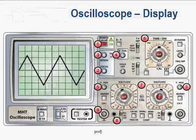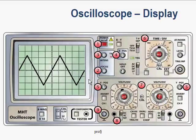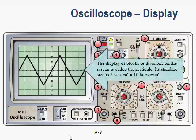The display of an oscilloscope is very important to understand. It is made up of a number of vertical and horizontal lines which create divisions or blocks. These blocks are called the graticule.